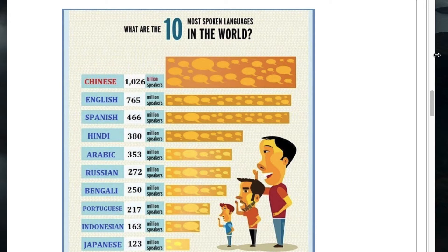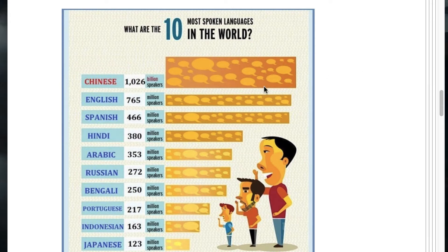Here's another example of bad graphics — a bar chart about how many speakers there are in the world. Instead of simple labeled bars, we have these elaborate things with little thought balloons. And perhaps they were spending so much time developing their fill-ins that we end up with 1,026 billion speakers — which is the same as a trillion speakers. That clearly isn't right.